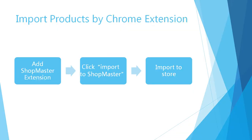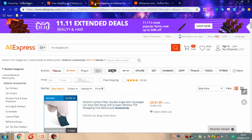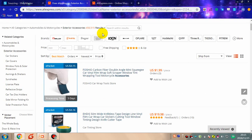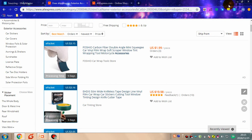Now let's move on to the next one: import product by Chrome extension. There are three steps: add the Shopmaster extension, click import to Shopmaster, and import to store. In this procedure you can visit the supplier directly. Make sure you have installed the Shopmaster extension. Here I have already installed one, so I will start directly.